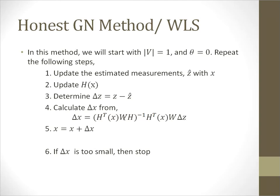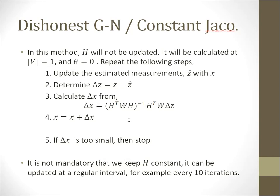In the dishonest Gauss-Newton method or the constant Jacobian method, the Jacobian matrix will be kept constant. It will not update. It will be calculated at V equals 1 and theta equals 0, and then these steps will be repeated till it converges.